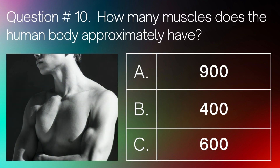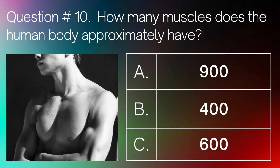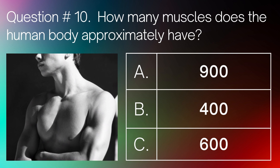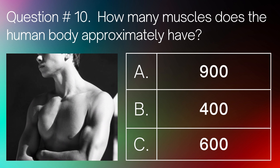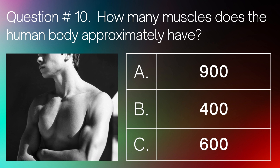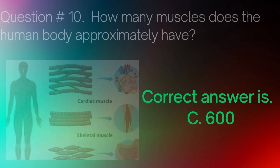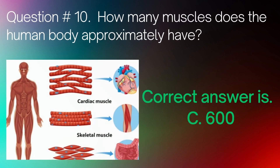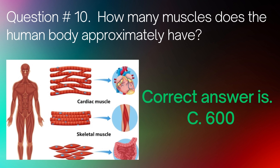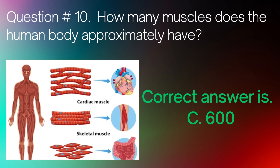Question number 10. How many muscles does the human body approximately have? A. 900. B. 400. C. 600. Correct answer is C. 600.